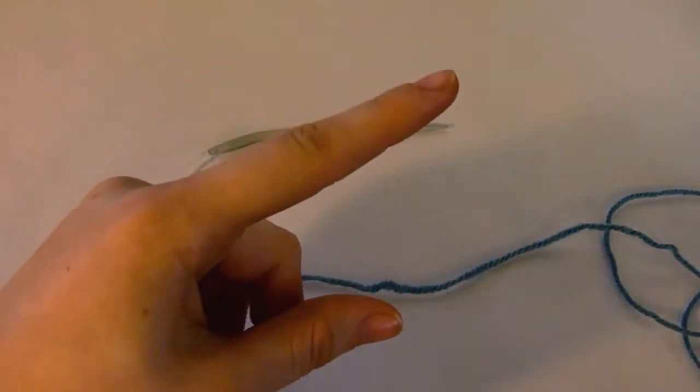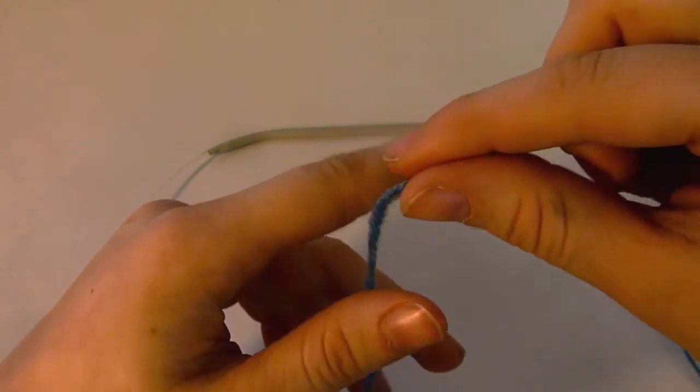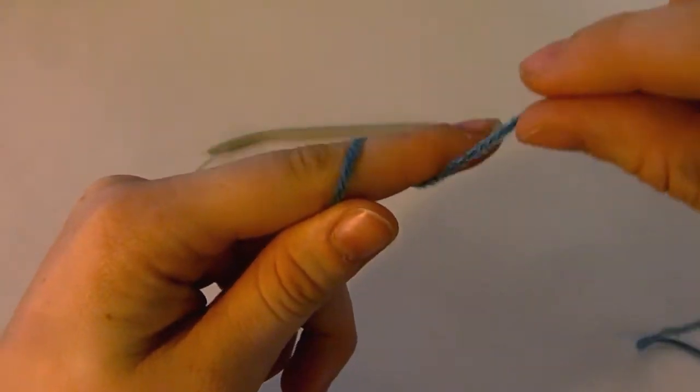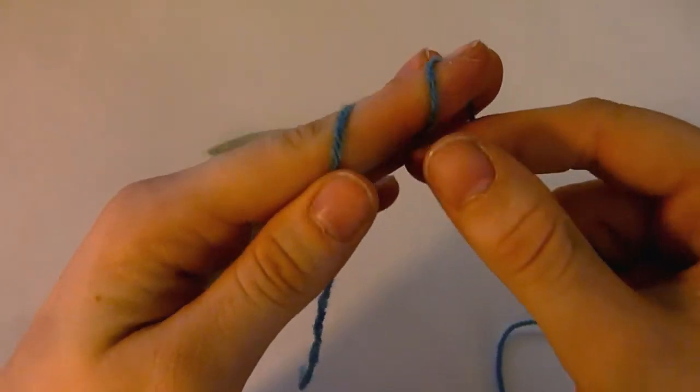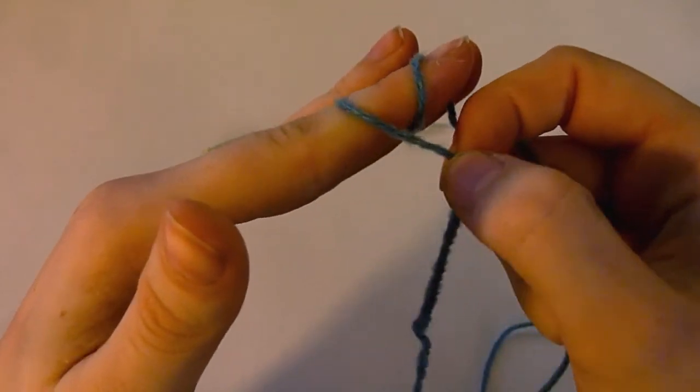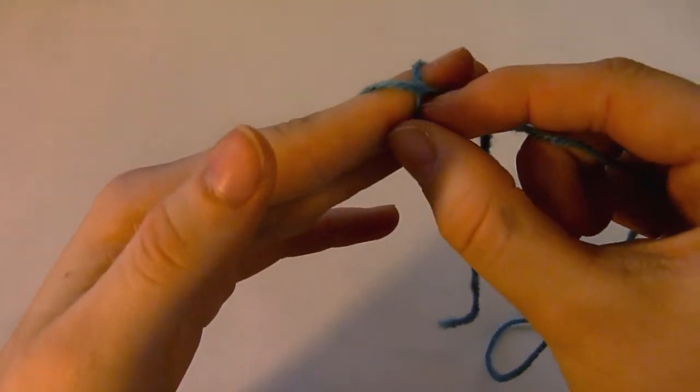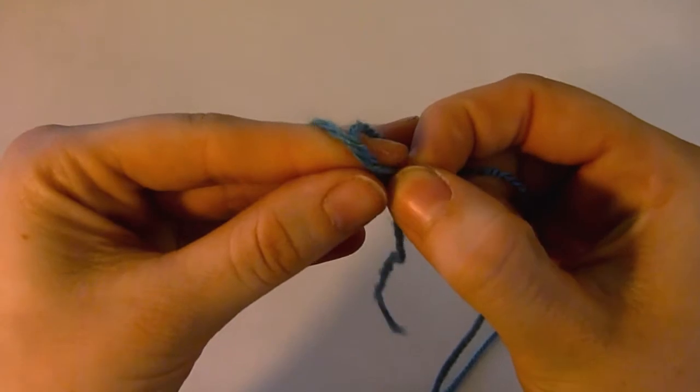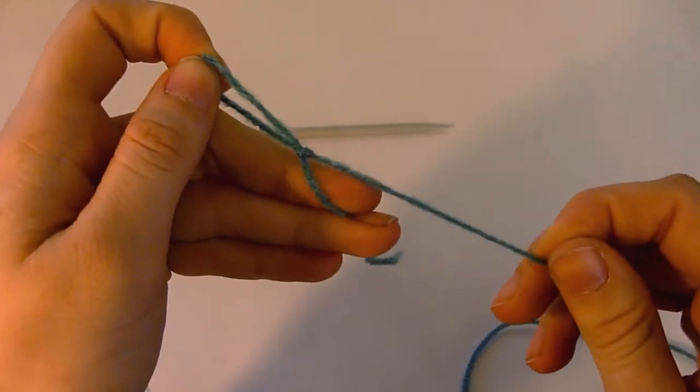So you're going to begin by sticking a finger out on your left hand and you're going to wrap the yarn around it twice. And then you're going to take this longer bit here, cross it over and then pull this strand over your finger and over that longer strand, making a loop.